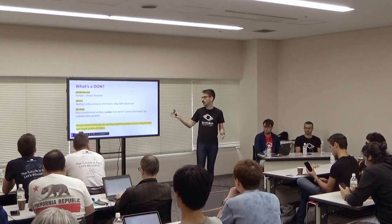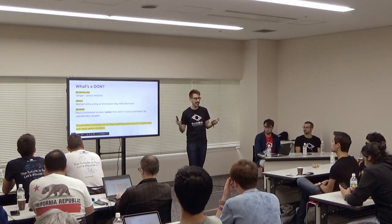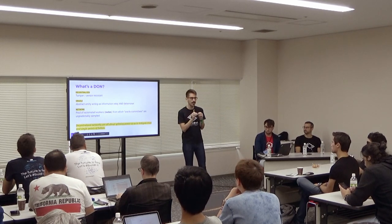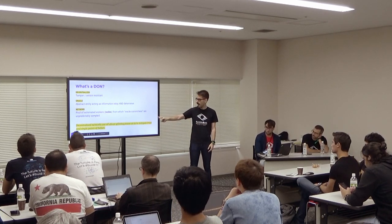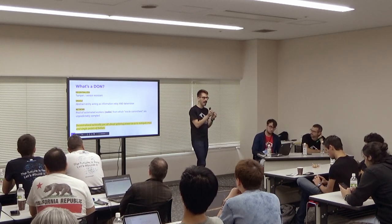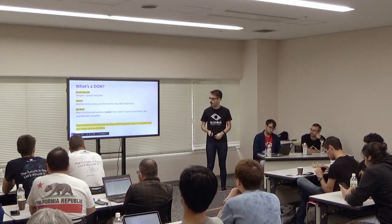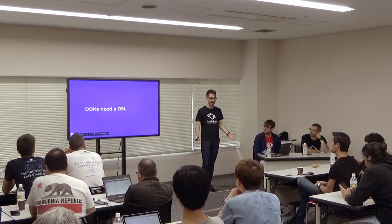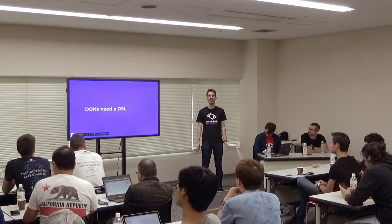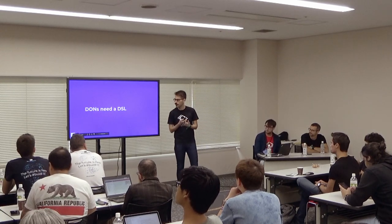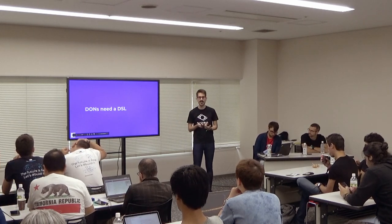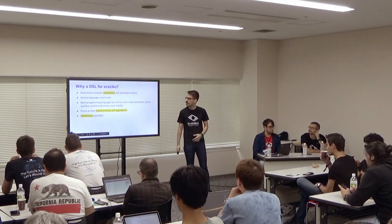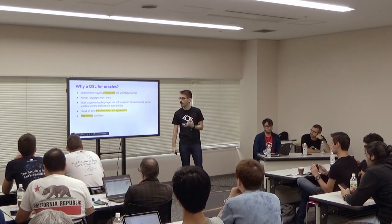If you query multiple APIs for the same data, how do you resolve the fact that they could return different results? That's the idea of the oracle. And 'network' means there's a pool of nodes randomly selected for the work of aggregating and delivering data into smart contracts. Decentralized networks should be about splitting power so as to mitigate trust in any single node or particular person, and to avoid any single point of failure.